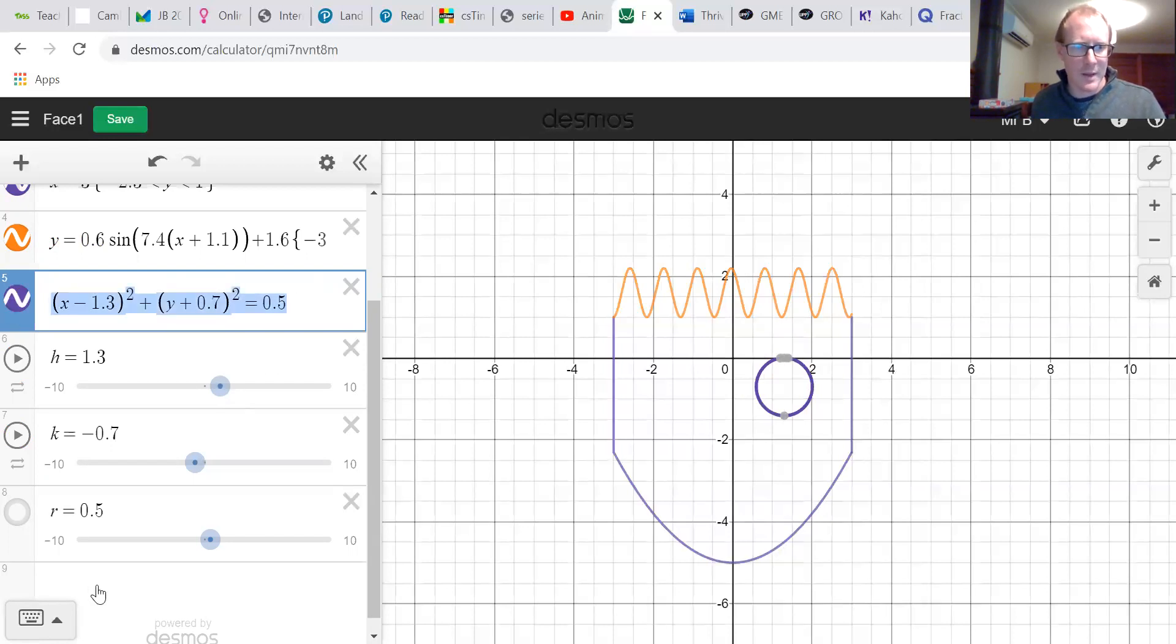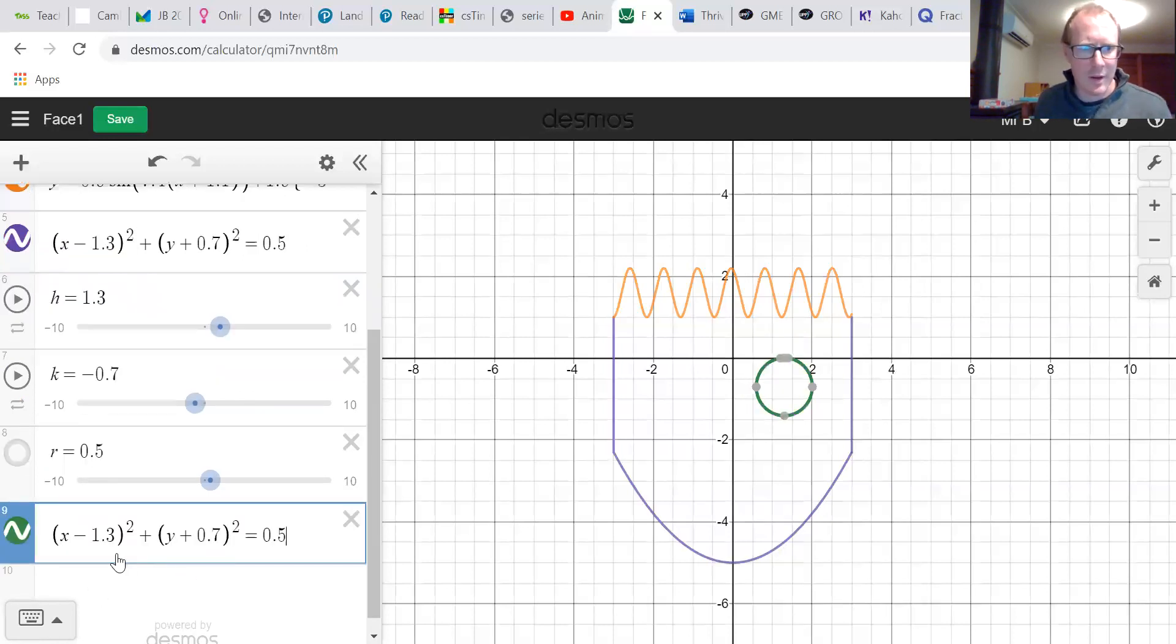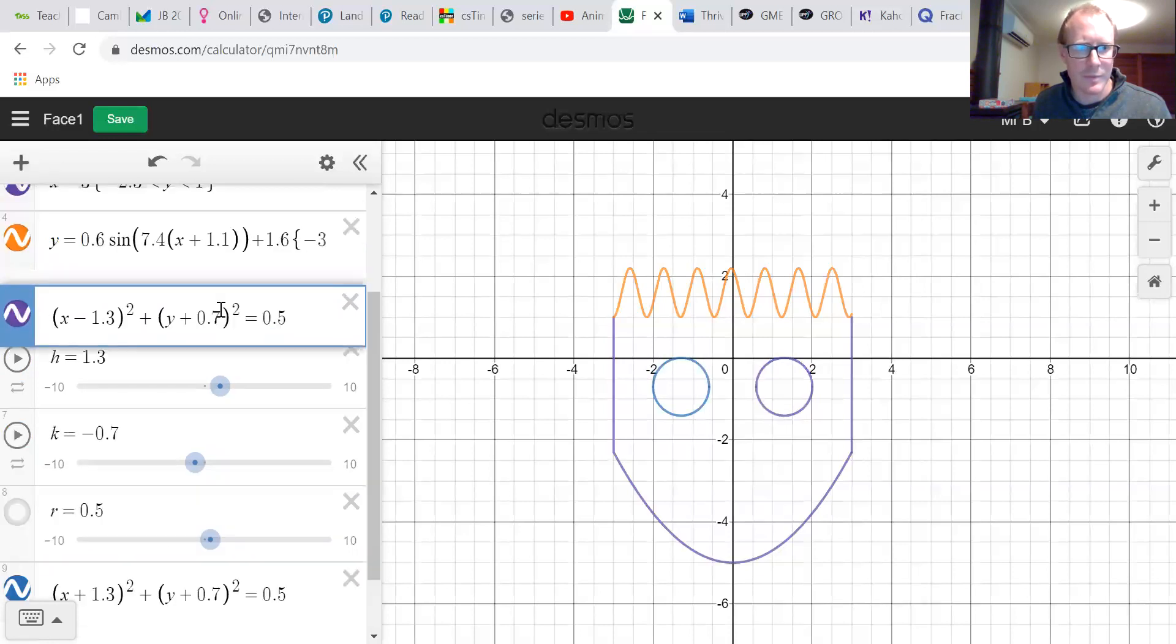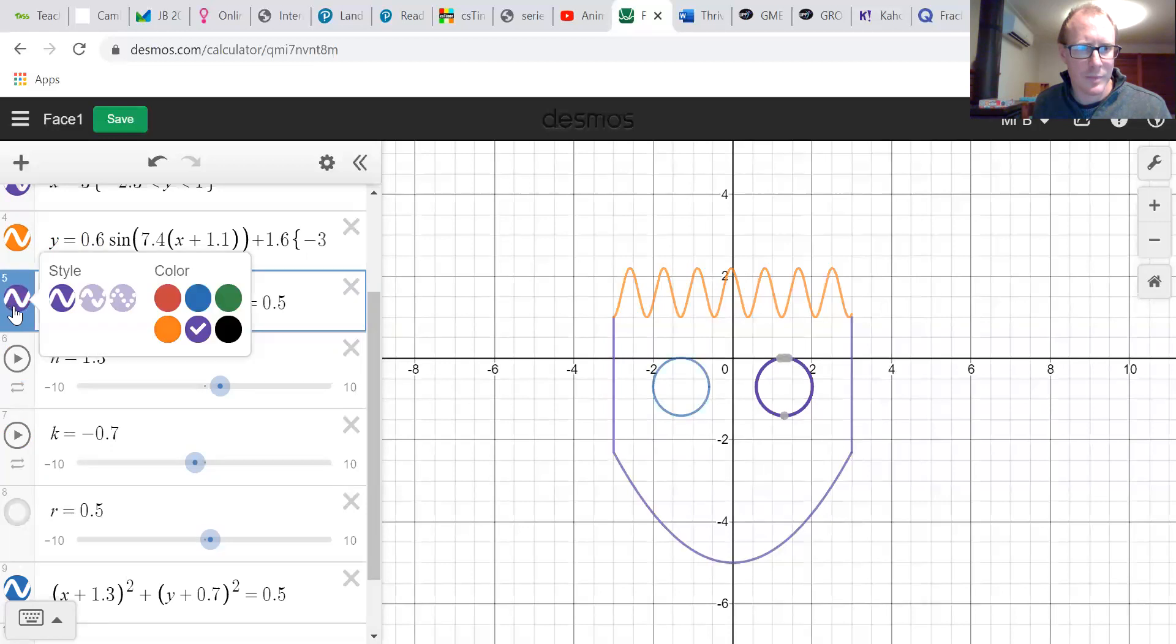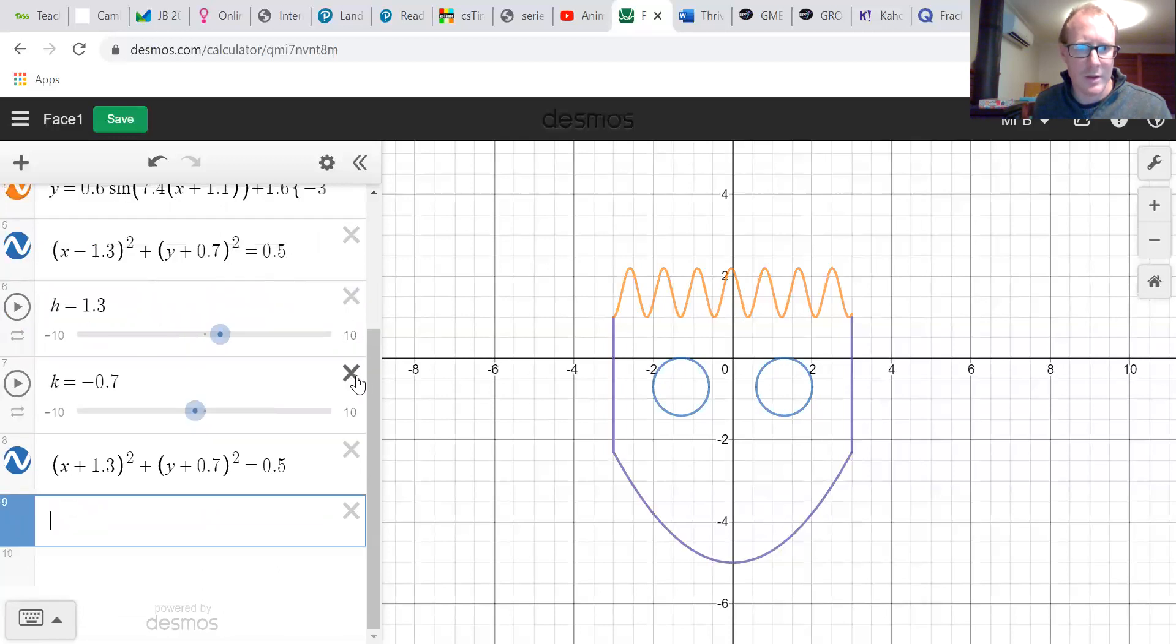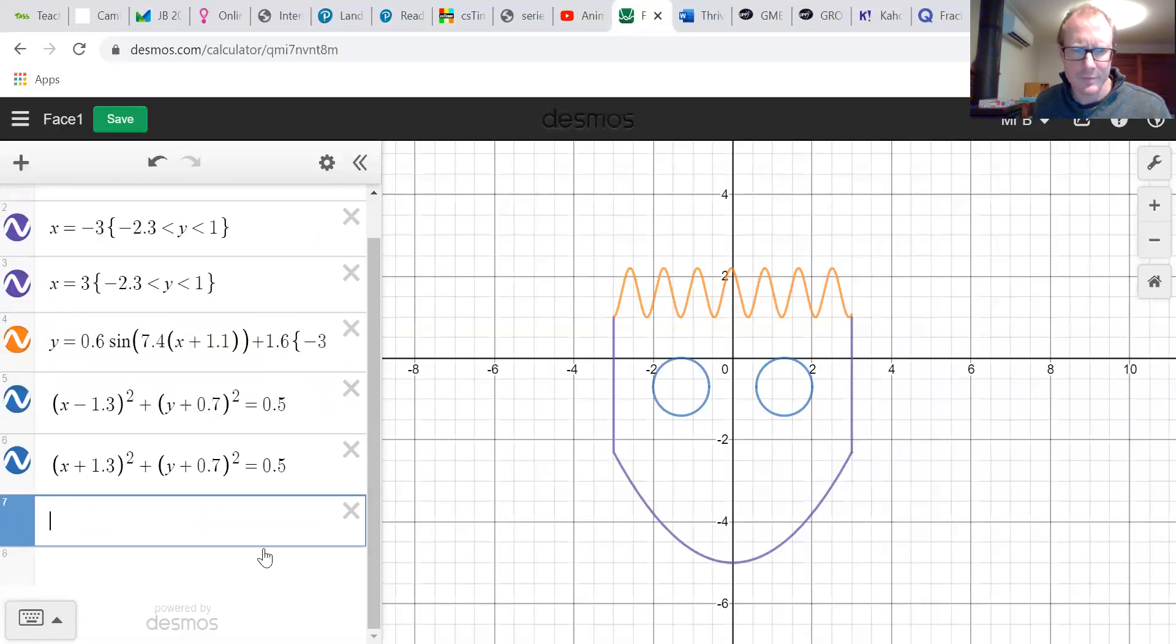If I can copy that, do another eye, and then I can just move it to the other side. Hopefully that'll work if I just change this to a plus. That looks pretty good. We'll make them blue eyes. And get rid of all these sliders.